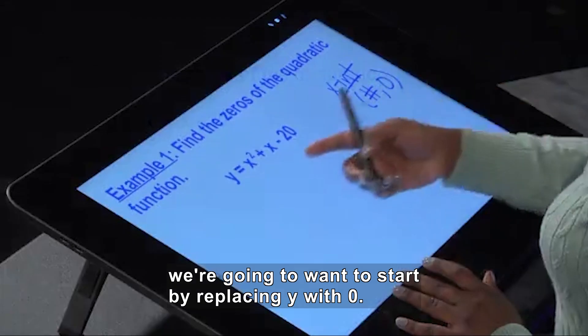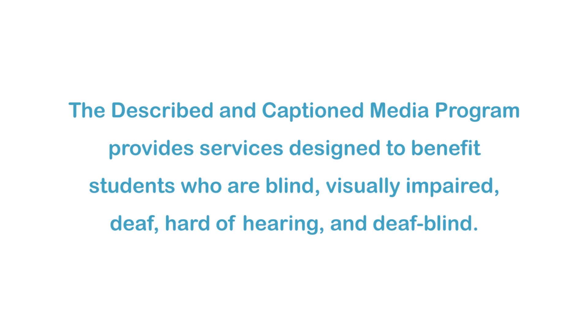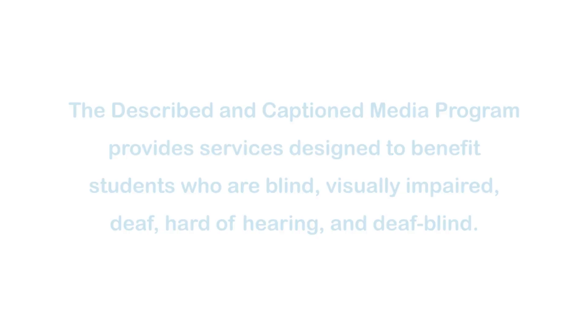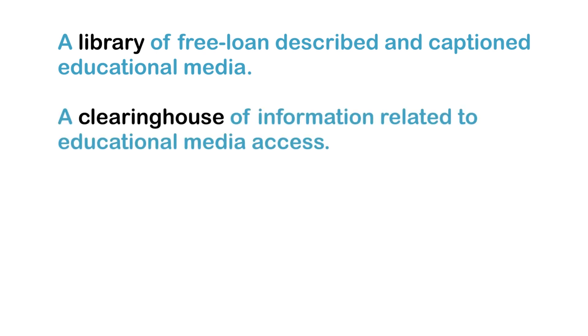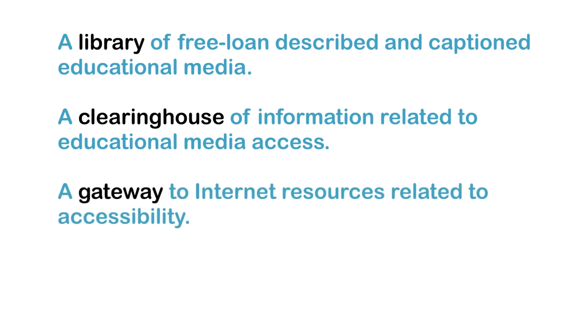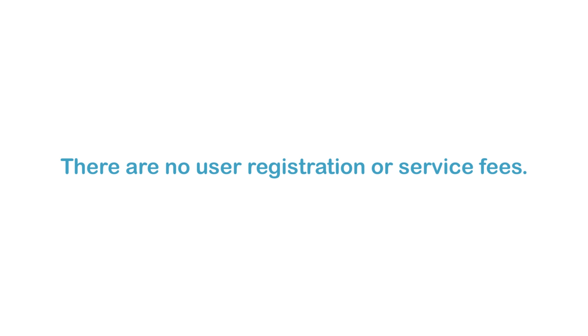The Described and Captioned Media program provides services designed to benefit students who are blind, visually impaired, deaf, hard of hearing, and deafblind. These services include a library of free loan-described and captioned educational media, a clearinghouse of information related to educational media access, a gateway to internet resources related to accessibility, and a set of guidelines for adding descriptions and captions to media. There are no user registration or service fees.